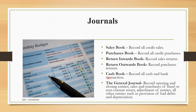Although different from the other main journals, the cash book is somewhat like a double entry system of accounts. Finally, we have the general journal, in which we record a number of things — including opening and closing entries, and the sales and purchases of fixed or non-current assets.